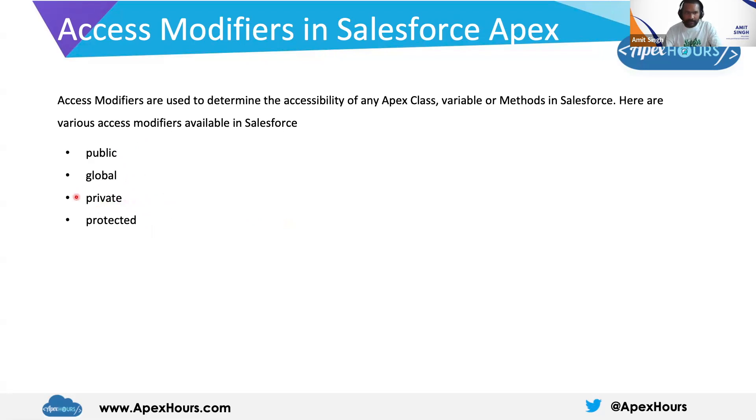By default, the private access modifier applies to your class, your variable, or your method.